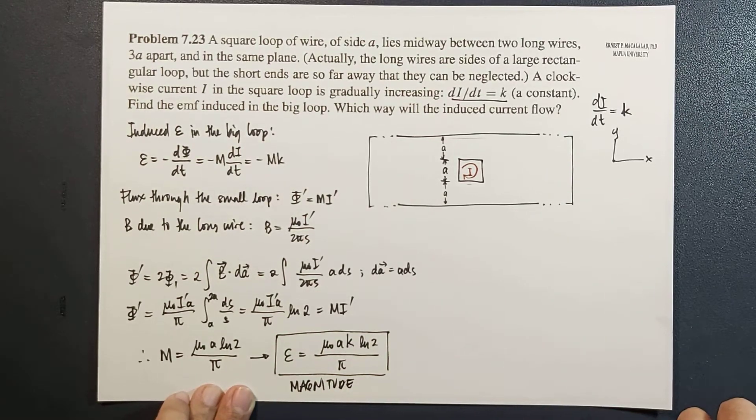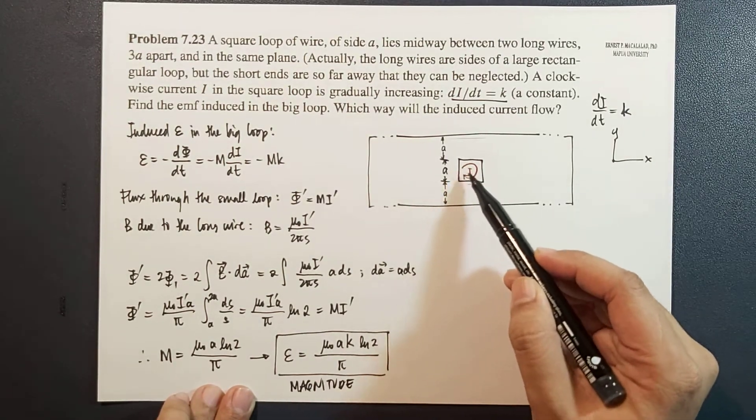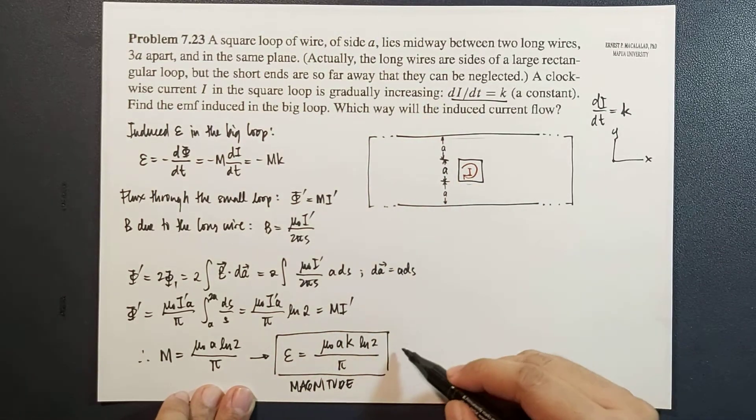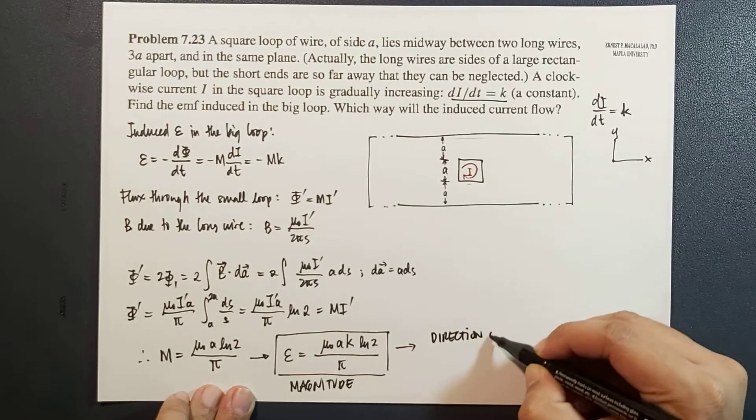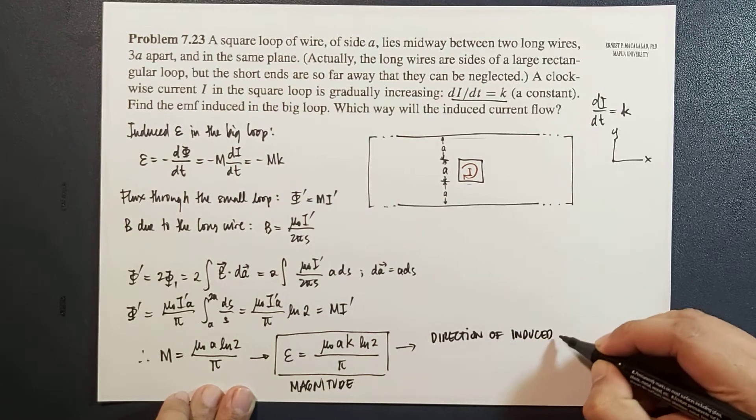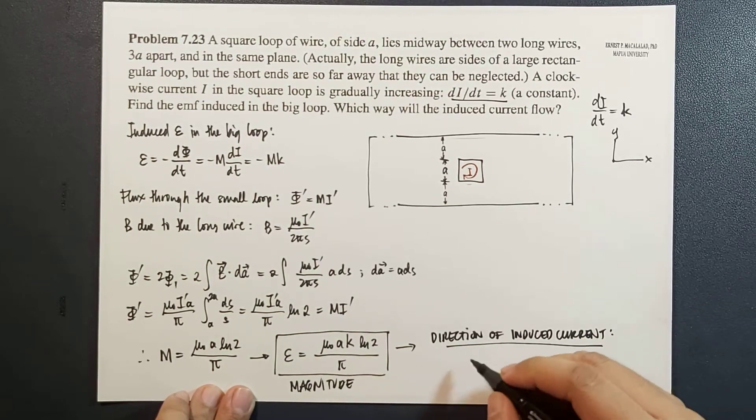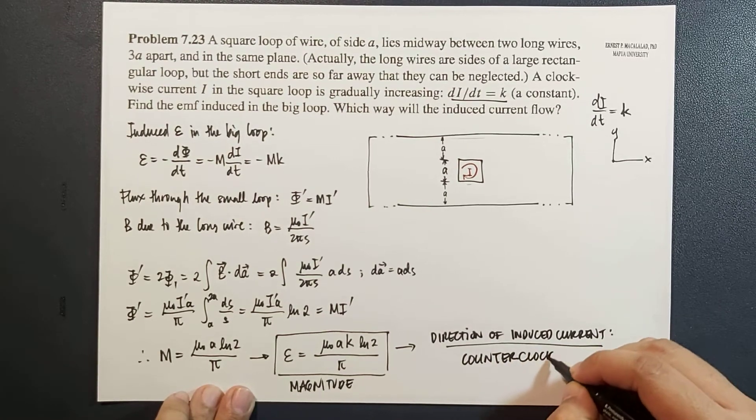Now, how about the direction? The direction of the EMF induced would be the same direction as your induced current. So by Lenz's law, because the current in the small loop is in this direction, in clockwise direction, therefore, the direction of the induced current would be counter-clockwise.